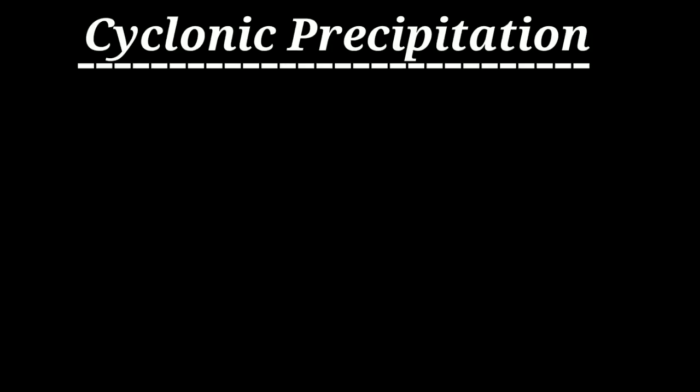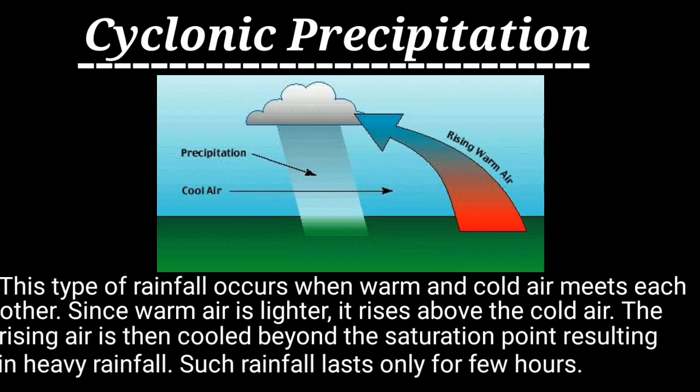Firstly we discuss about cyclonic precipitation. The cyclonic word we normally hear in day-to-day life — when we hear about thunderstorms, we hear the word cyclone. So what happens? When the sun rays fall on the water surface, the temperature of the water heats up.